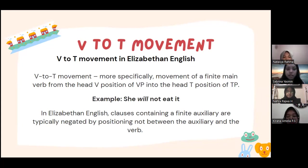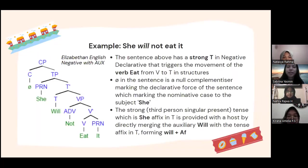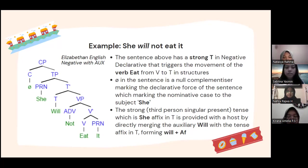In Elizabethan English, clauses containing a finite auxiliary are typically negated by positioning 'not' between the auxiliary and the verb. Here is the T diagram. The sentence above has a strong T in negative declarative that triggers the movement of the verb 'eat' from V to T in structures.